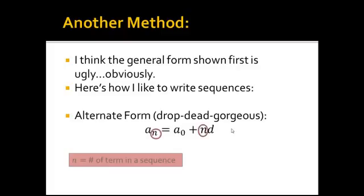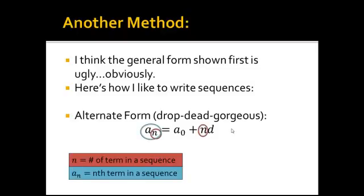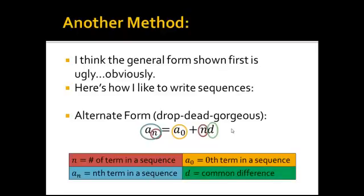Once again, n means the nth term of a sequence, the number of term in a sequence. a sub n is the nth term of a sequence, so like the 4th, 5th, 6th term of a sequence. n is 5, 6, 7. a sub 0 is the 0th term of a sequence, which is kind of weird if you think about it, like, what's the 0th thing on a list, but it's really straightforward to find that. And d is still our common difference.